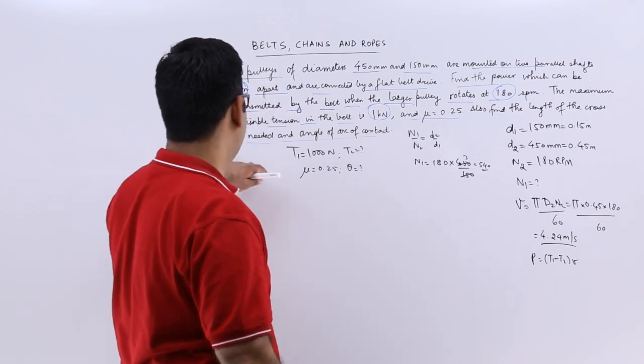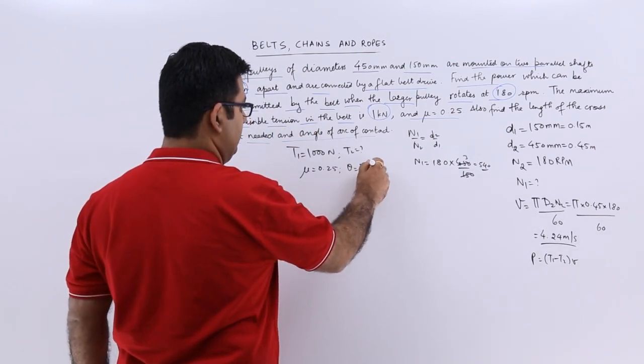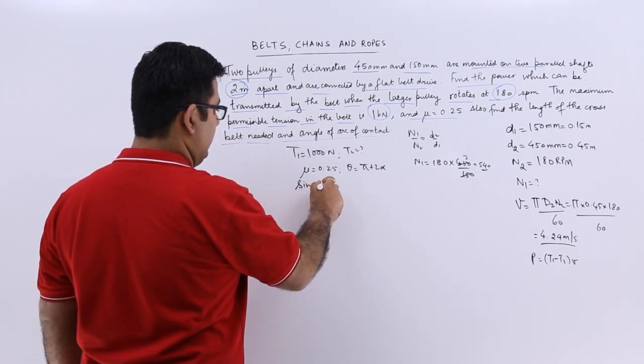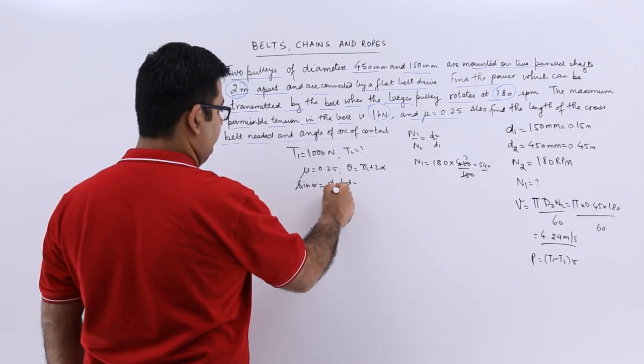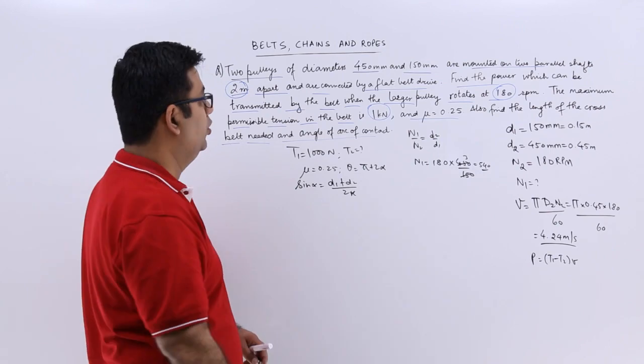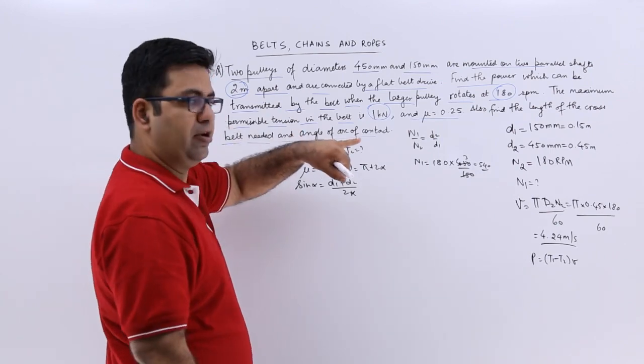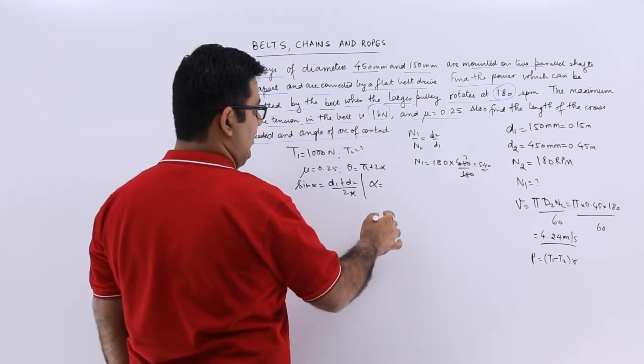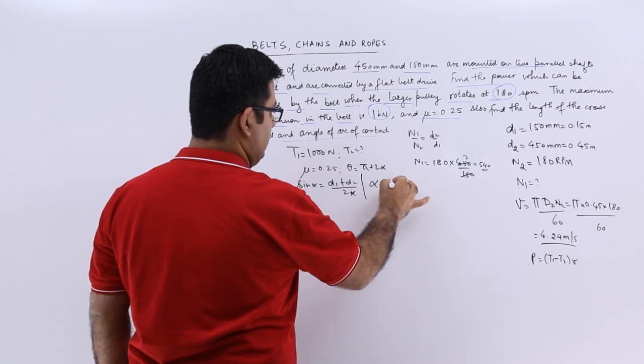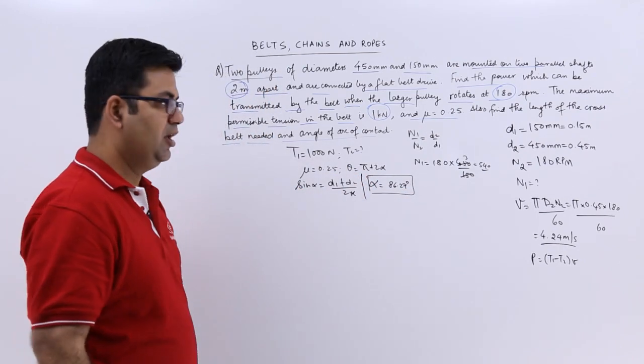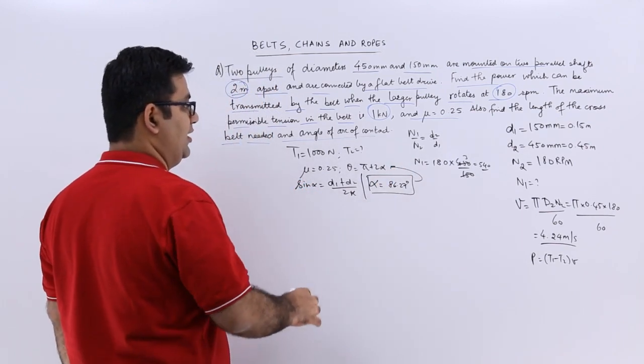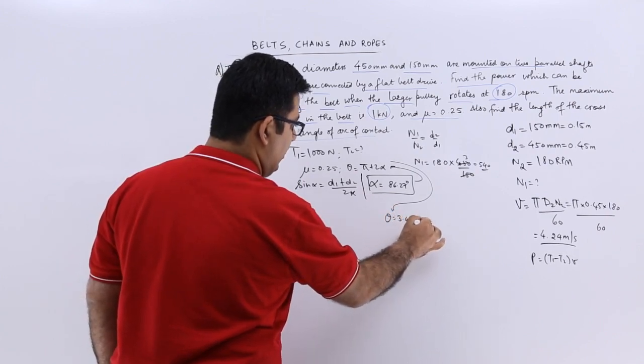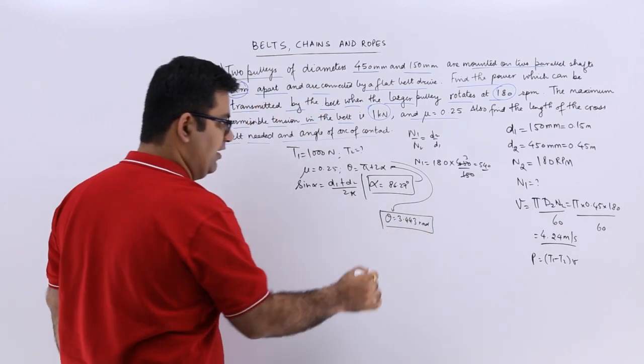Now it says it's a cross belt arrangement. So theta will become pi plus 2 alpha. Sine alpha would be D1 plus D2 by 2x. So x is 2 meters. D1, D2 are already given to us. So from here we can find out alpha. So alpha upon putting the values will come out to be 86.27 degrees. So when you put the value over here and convert it into radians, theta will be 3.443 radians.